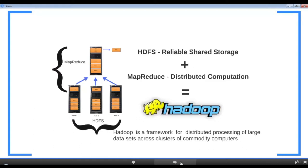Hadoop is a framework for distributed processing of large data sets across clusters of commodity computers. The last two words — commodity computers — make Hadoop special: the 100 nodes in your cluster don't need specialized hardware; they're enterprise-grade server nodes with a processor, hard disk, and RAM. You can start with a 10-node cluster and simply add more nodes to reduce execution time — Hadoop scales horizontally.